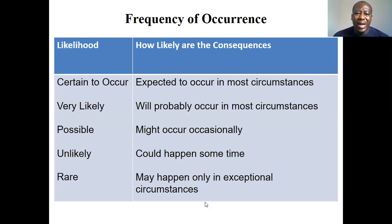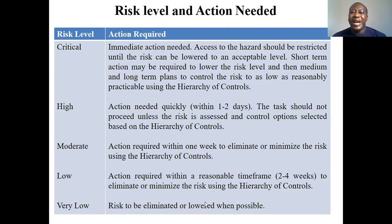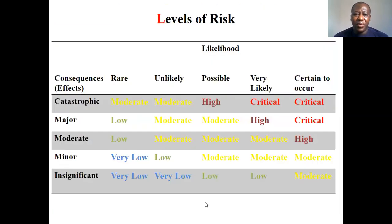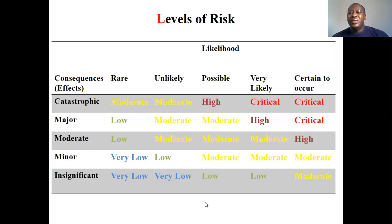The risk level and action needed table shows that if the risk is critical, immediate action is needed; if high, action is needed quickly within one or two days; moderate requires action within one week to eliminate or minimize the risk; low requires action within a reasonable timeframe; and very low has its own required action. The risk level matrix shows consequences against likelihood — rare, unlikely, possible, very likely, and certain — to measure overall risk level. For instance, a catastrophic consequence rated as unlikely would be moderate, while if it is possible it would be high.